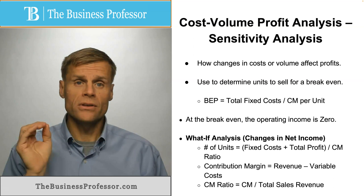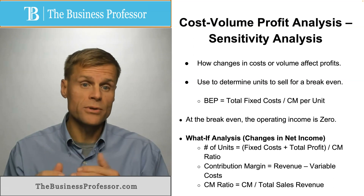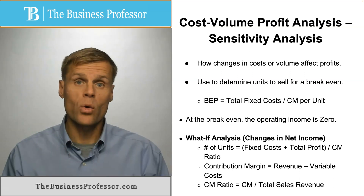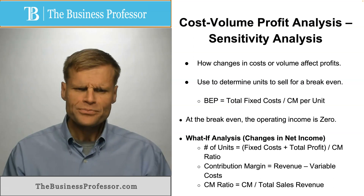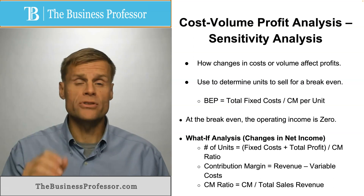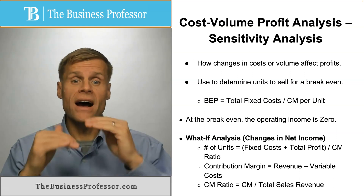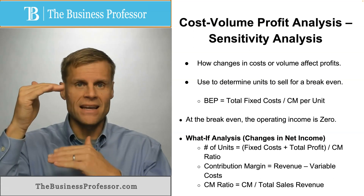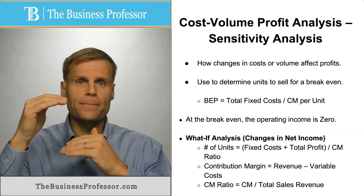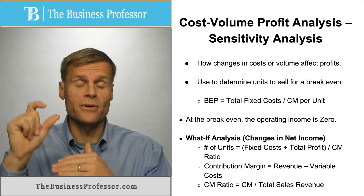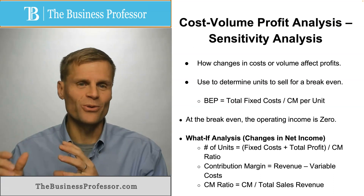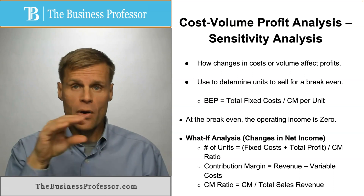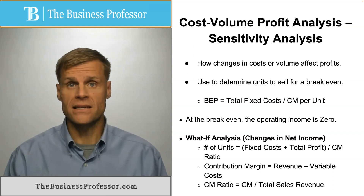Then you would find your contribution margin ratio, which again was the denominator in our equation. You would take your contribution margin divided by your total sales revenue. It is a percentage — your contribution margin as a percentage of your total revenue — and you use this again as part of that sensitivity analysis.